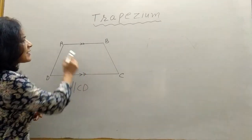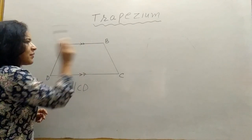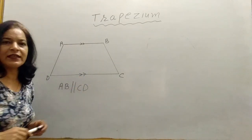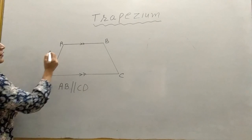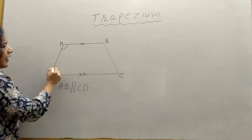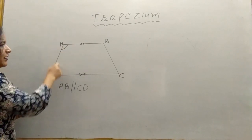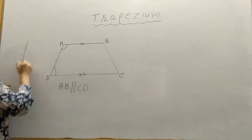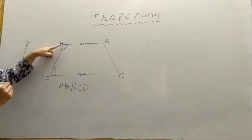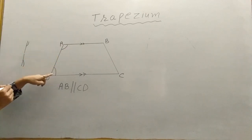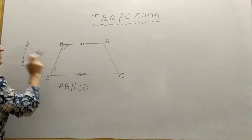These parallel sides are called the bases of the Trapezium. AB is the base of the Trapezium and CD is also the base of this Trapezium. At angle A and angle D — these are adjacent angles because they are sharing a common side. A and D are adjacent angles on the non-parallel side.